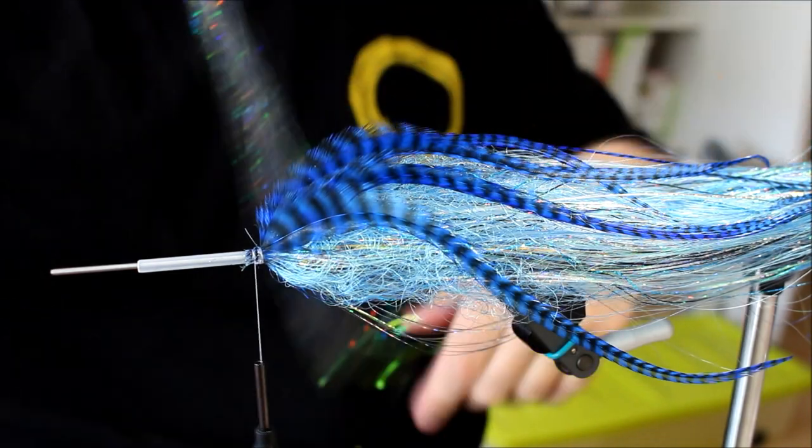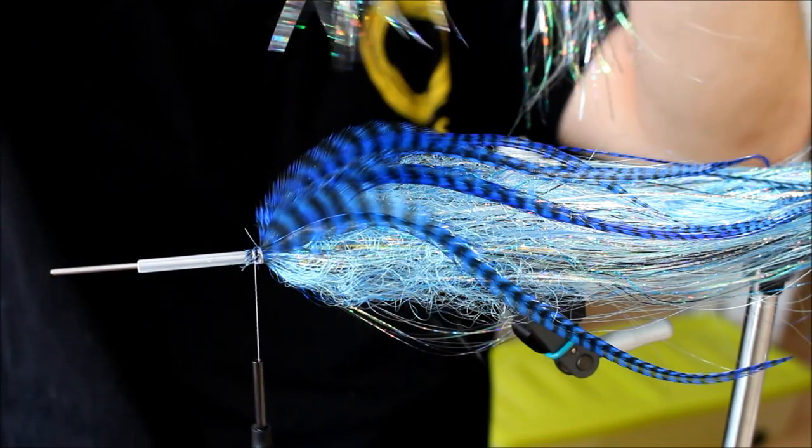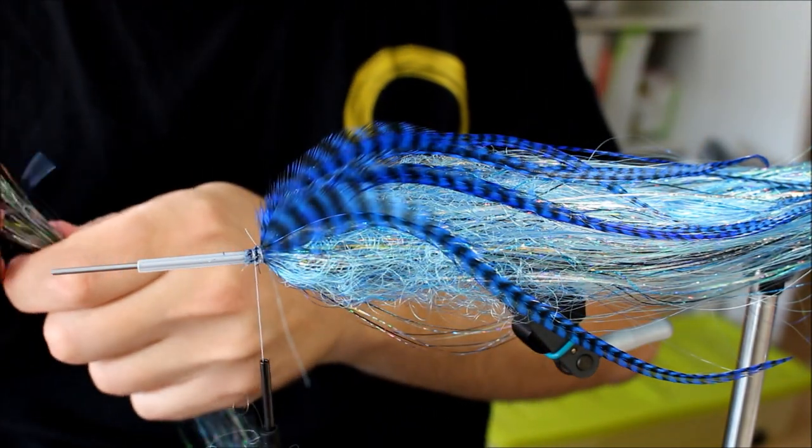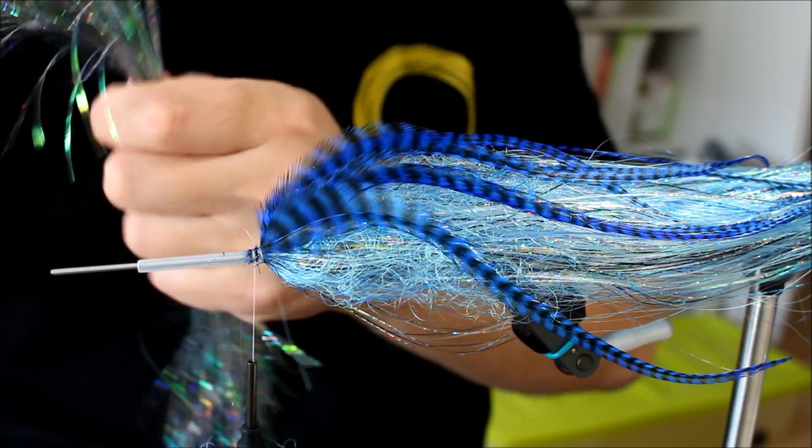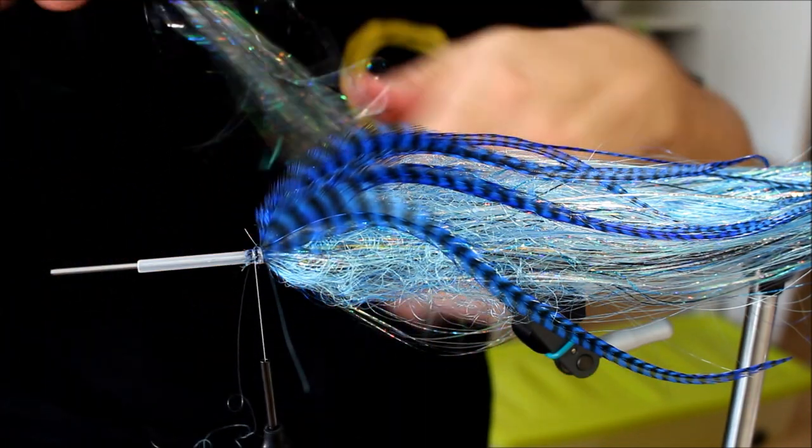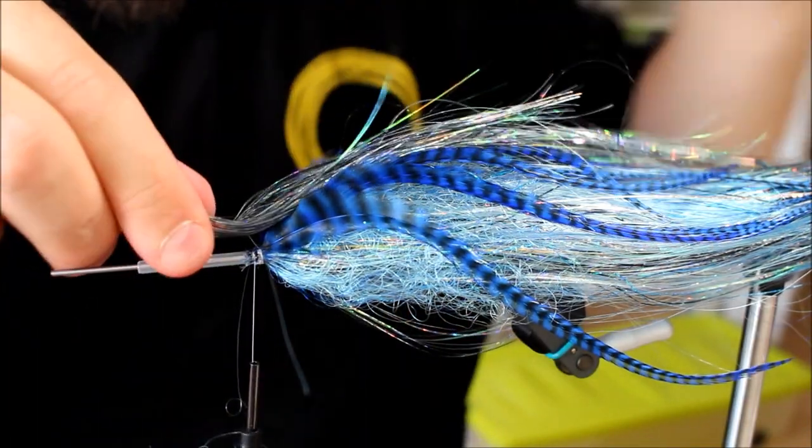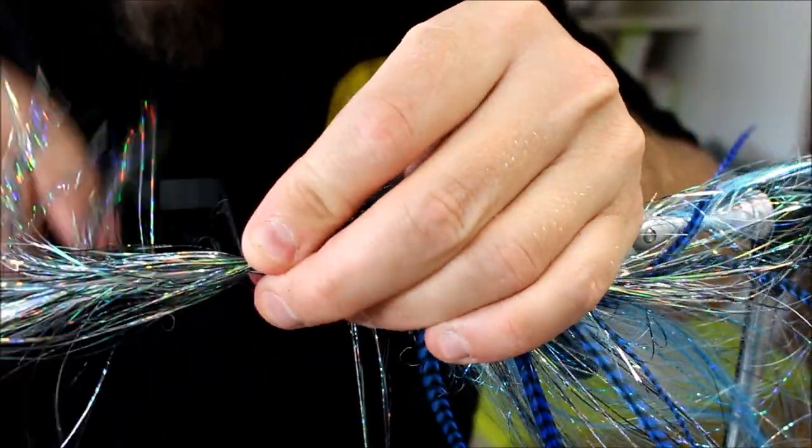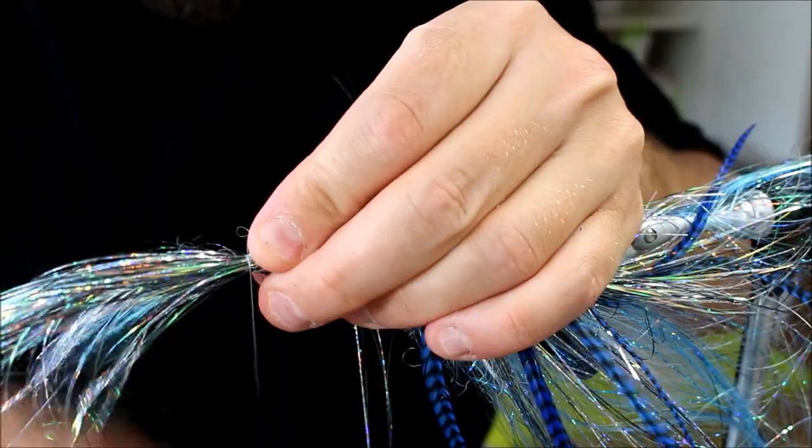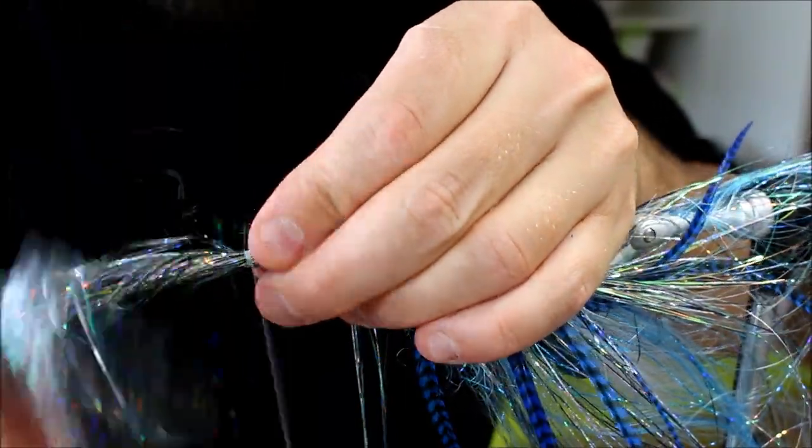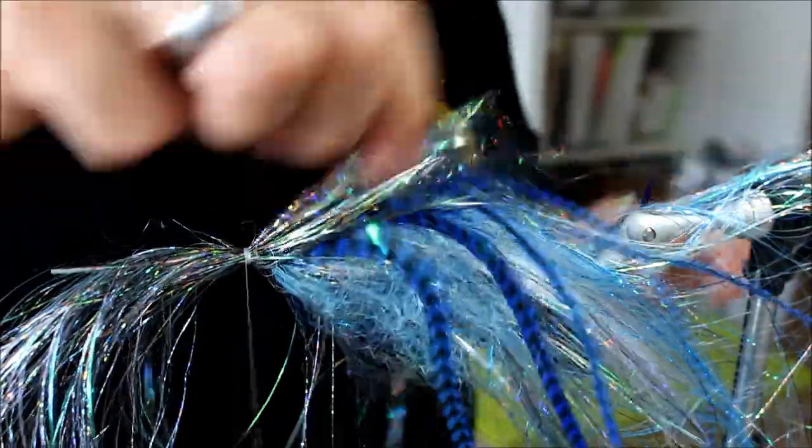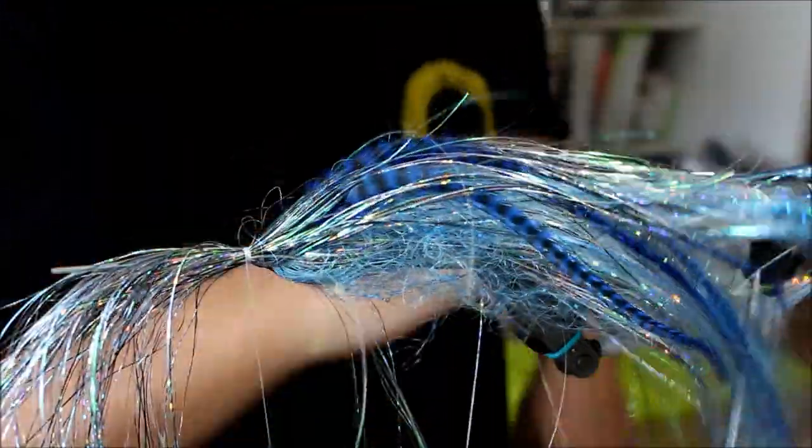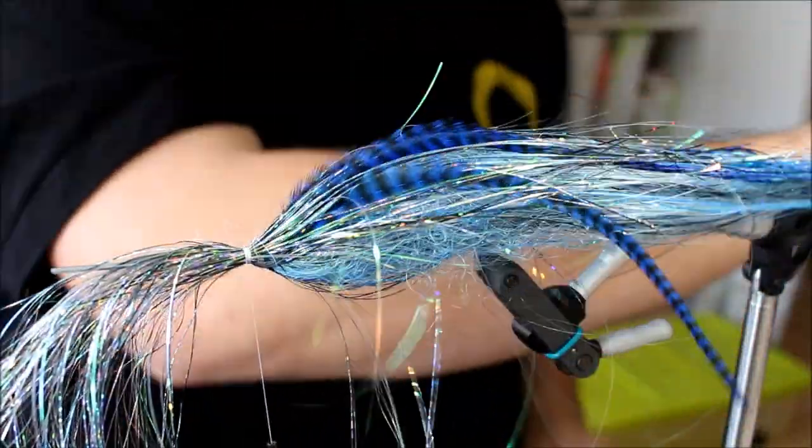And then I'm going to take the final bundle of Flashabou here. I'm going to make this so it's not completely even in length, cut it off in the other end. I'm going to tie this down so it's going to be all the way around the tube here. This is an easier way to make a flash hackle, like that.